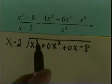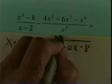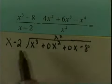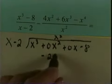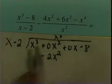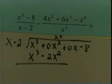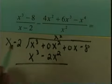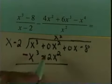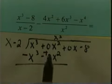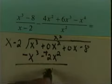x goes into x cubed, x squared times. Multiply: x squared times x is x cubed, and x squared times negative 2 is negative 2x squared. To subtract, I add the opposite — the opposite of x cubed is negative x cubed, and the opposite of negative 2x squared is positive 2x squared. x cubed cancels, and 0 plus 2 gives 2x squared.